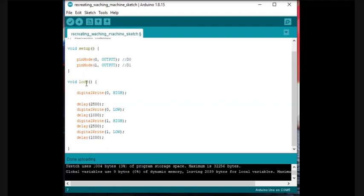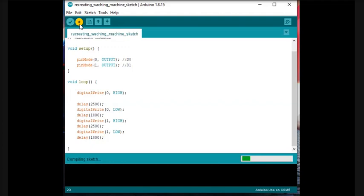And for our void loop function we first set the pin zero, digital output zero, to turn on, so to high, and we wait for 2500 milliseconds or 2.5 seconds. Then we turn it off, we set it to low and we wait for another one second before it loops again. Now let's upload our sketch.